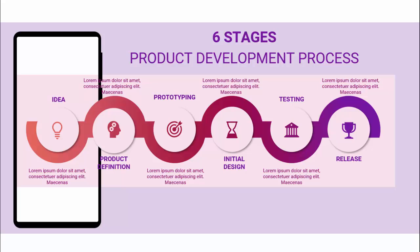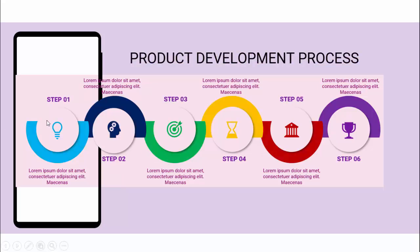In today's tutorial I'm going to show you how to create this six-stage product development process. I have created a design of a mobile and then from that I have created six different product development process steps — starting with the idea, you can add any icon and then add some detailed text. Then comes the next step: product definition, prototyping, initial design, testing, and release. I've also created a few more slides with different color combinations.